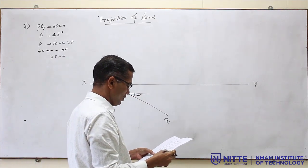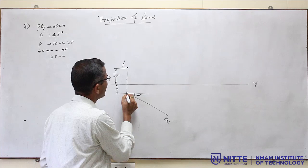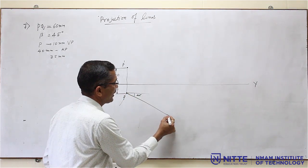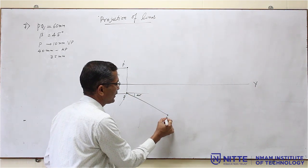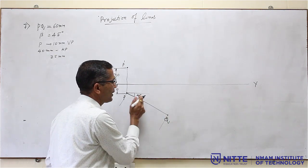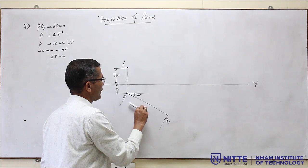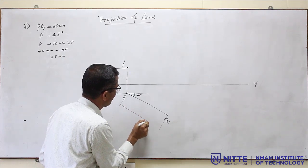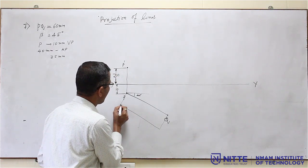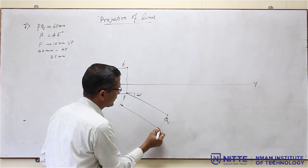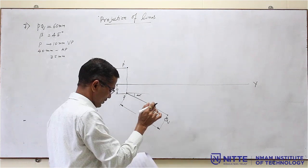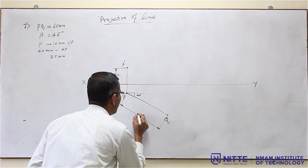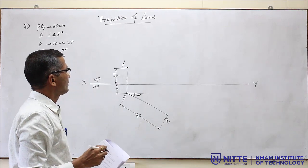They have given the top view as 60mm, so you have to dimension this. For this line, draw a light line perpendicular, similarly from the other end draw another perpendicular. Leave a gap of more than 10mm and draw a line parallel to this — it should be a 2H edge line. Draw arrowheads on both ends, split at the middle, and give the dimension 60. That 60 should be written vertically — do not write it inclined.